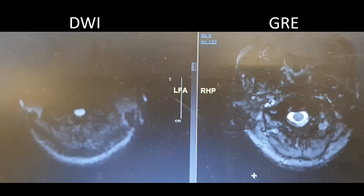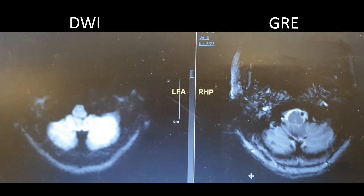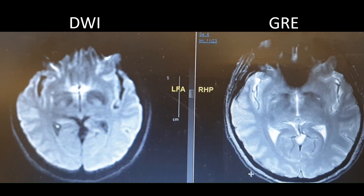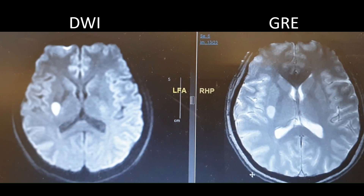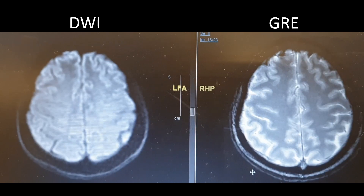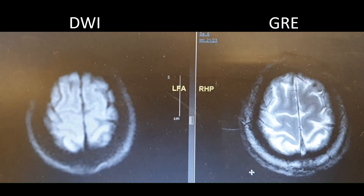The image on the left is the DWI sequence and on the right is the GRE. Concentrate on the region of interest, which is the right putaminal infarct. If you see anything dark within the area or region of infarction on GRE, this may suggest hemorrhagic transformation. In this case, the GRE on the right did not show any hemorrhagic transformation.